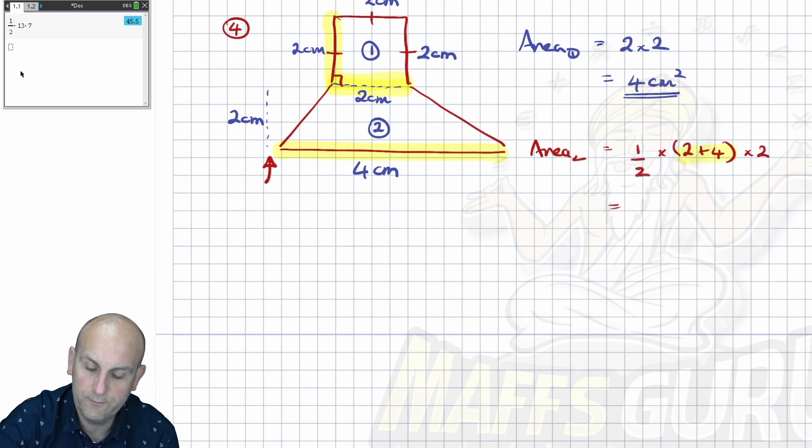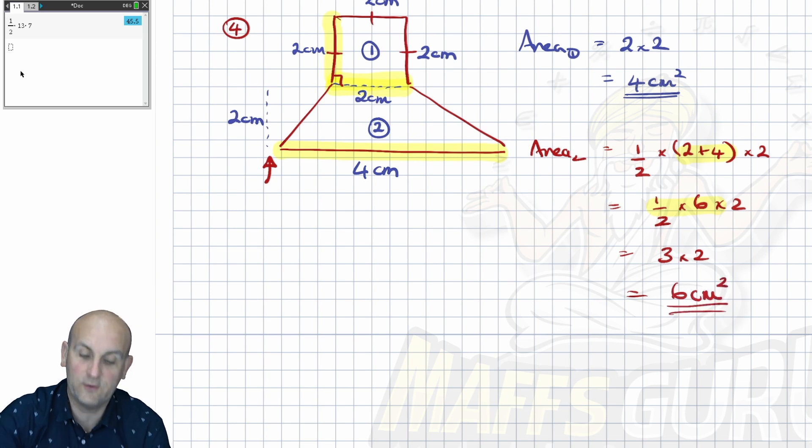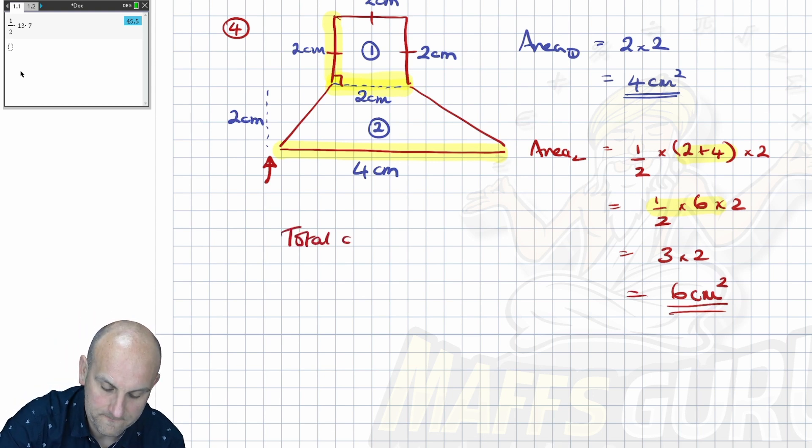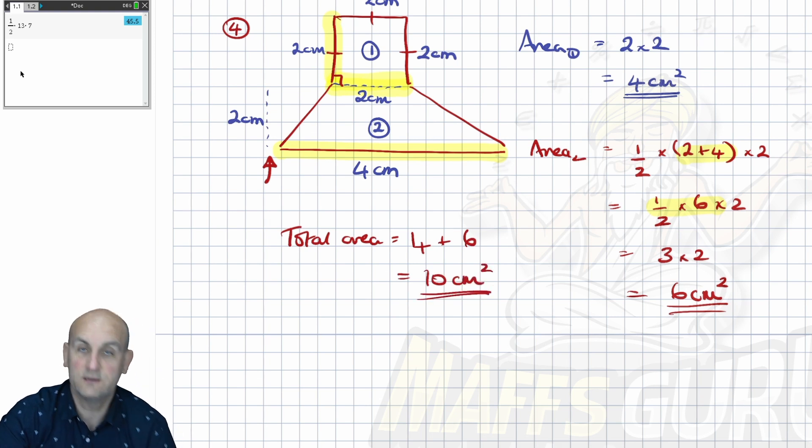Two plus four is in fact six. Write everything else down that I haven't used. We know a half of six is three and three times two is six centimeters squared. Is that the end of the question? Nope. Because that was the area of the two individual bits. So therefore my total area is going to be four plus six or 10 centimeters squared. Ka-ching.